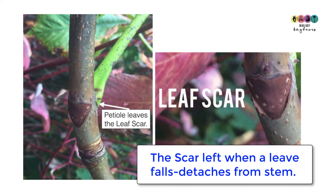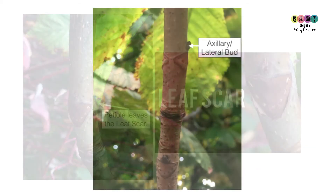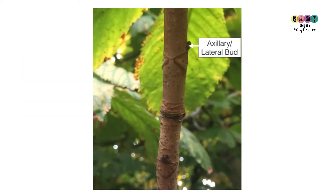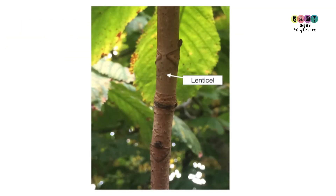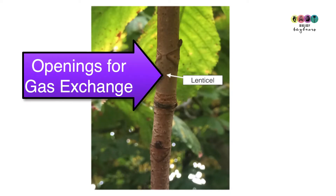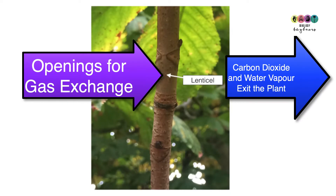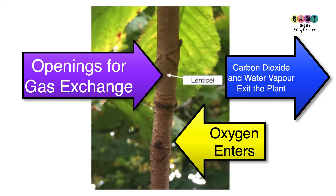Another type of scar left on a woody stem is a leaf scar — the scar left when a leaf falls or is detached from the stem. When the petiole falls away, it leaves a leaf scar. Just above the leaf scar you can see the axillary or lateral bud, which will give rise to new branches, and remember there is meristematic tissue in those buds. Another feature on the woody stem is lenticels — openings for gas exchange. Carbon dioxide and water vapour leave the plant through the lenticels, and oxygen enters.